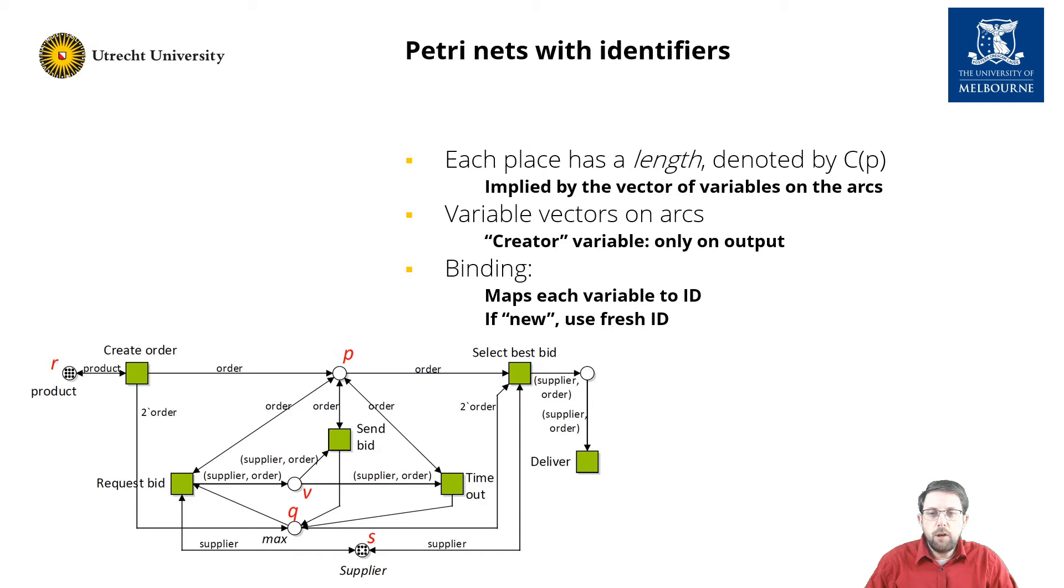If a variable only occurs on an output arc of a transition, then it creates a new fresh identifier. A transition is enabled if a mode exists that assigns an identifier to each variable, such that we can bind the token in each input place.